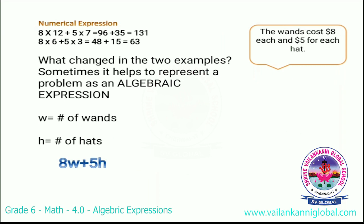So how do we change this into an algebraic expression? First we take the total number of vans as w and the number of hats as h. We know we are going to multiply the cost of vans by the number of vans. Cost is 8 and number of vans is w, so 8 into w is 8w. Plus cost of hat is 5 and number of hats is h, so we get 8w plus 5h. This is the algebraic expression: 8w + 5h.